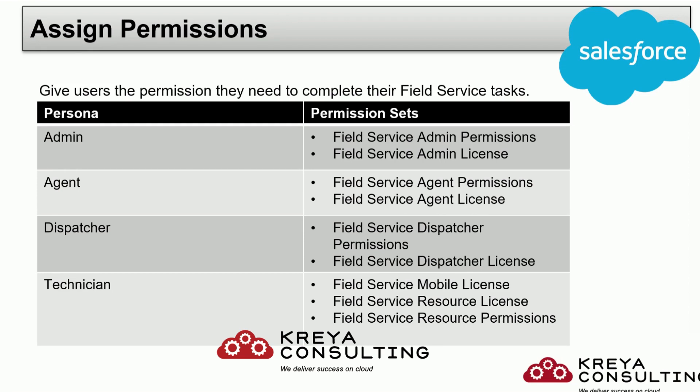Let's have a look at these permission sets and which users they must be assigned to, so that we know our users and how many licenses we need. Any user that is supposed to be an admin must have the Field Service Admin permission and license. Any user that is supposed to be an agent must have the Field Service Agent permission and Field Service Agent license.